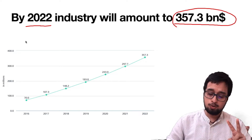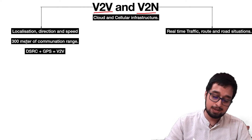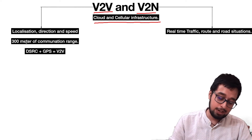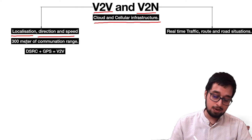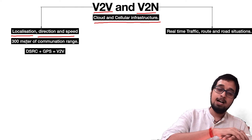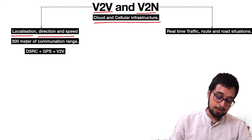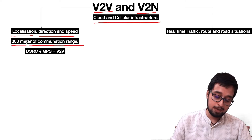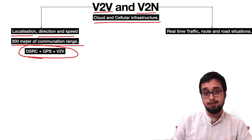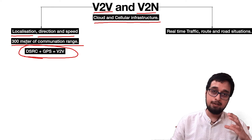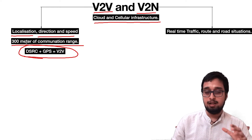Now we will talk about two things in more detail: V2v and V2n. These systems are basically cloud and cellular infrastructure. V2v works in terms of localization, direction, and speed, which is why V2v is considered important while driving — it helps you understand the road ahead. It works within a 300-meter communication range and uses GPS as well as DSRC. If you don't know what DSRC is, I covered it in a previous video — I will leave the link in the description.